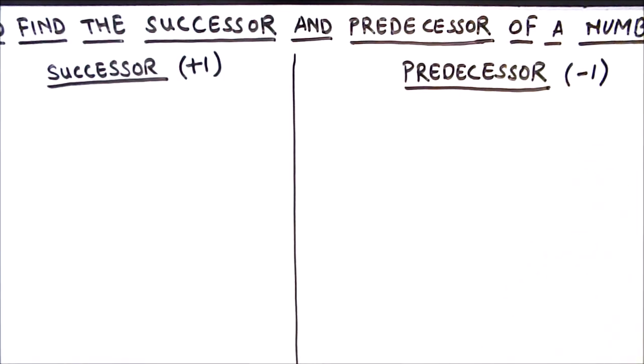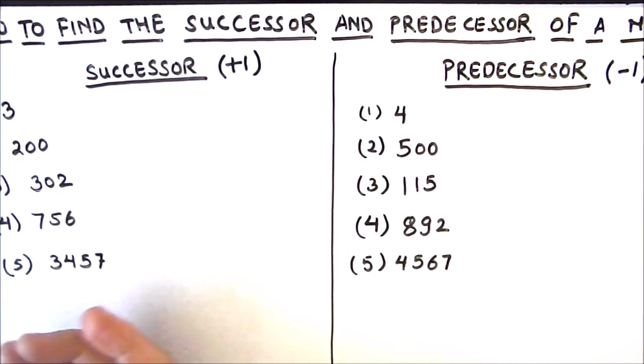We need to subtract 1 from the number to get the predecessor of that number. So let us solve a few examples of finding successor and predecessor.